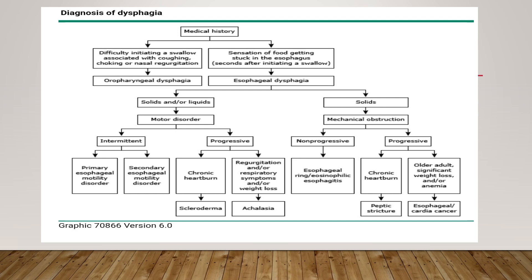Once esophageal dysphagia is identified, determine whether it is to solids only or to both solids and liquids. If only to solids, this is a mechanical obstruction. Then determine if it is progressive or non-progressive. If non-progressive (intermittent), this is because of esophageal rings, webs, or eosinophilic esophagitis. If progressive, it can be peptic strictures or GERD-related; in older adults with significant weight loss and anemia, consider carcinoma.